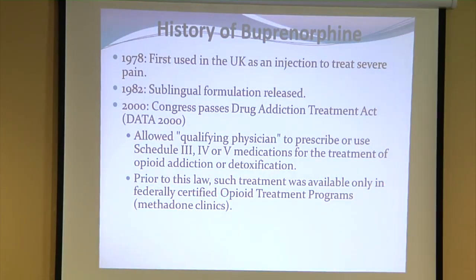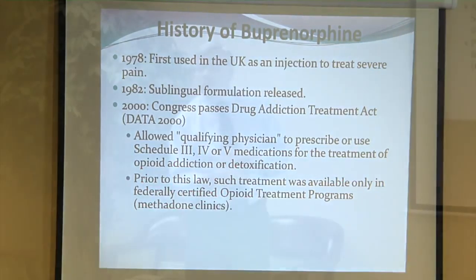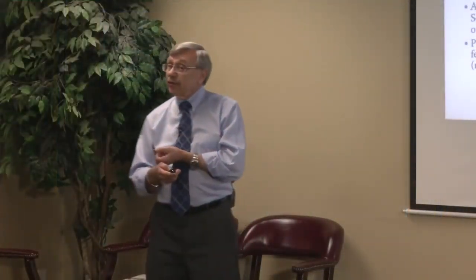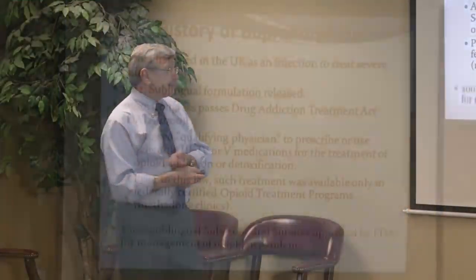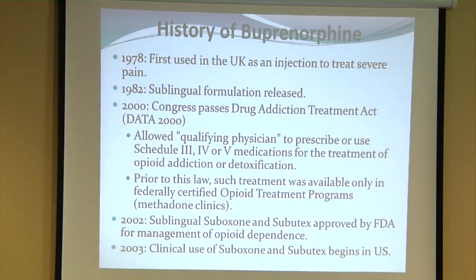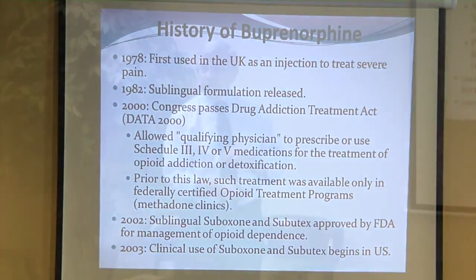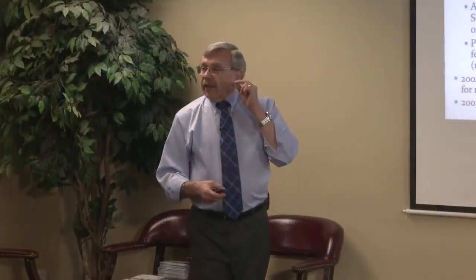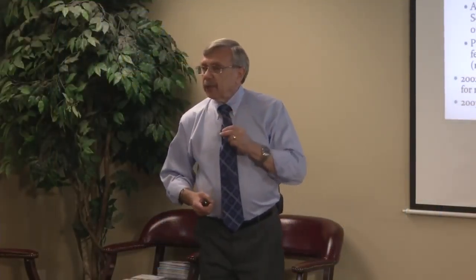Before this law, as mentioned in the previous slide, you could only get treatment for opioid addiction in a methadone clinic. In 2002, sublingual Suboxone and Subutex were approved by the FDA, and in 2003 we actually started using them in the US.